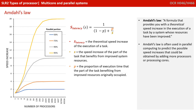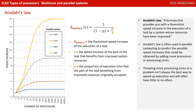Amdahl's law is quite famous in computer science. It's a formula that provides a theoretical speed increase in the execution of a task by a system whose resources have been improved. Amdahl's law is often used in parallel computing to predict the possible speed increases obtained by adding more processors or processing cores. As you can see, simply throwing more processing cores at a problem isn't the best way to speed up execution, and sometimes has little to no effect at all.